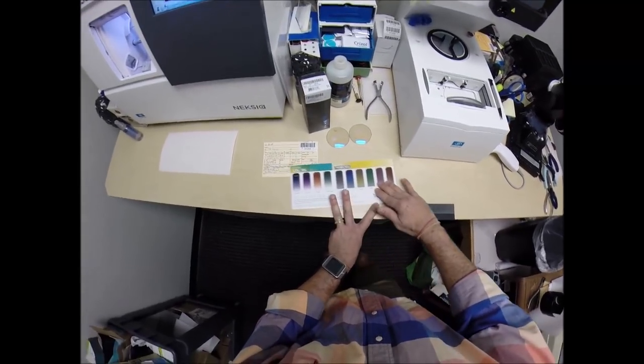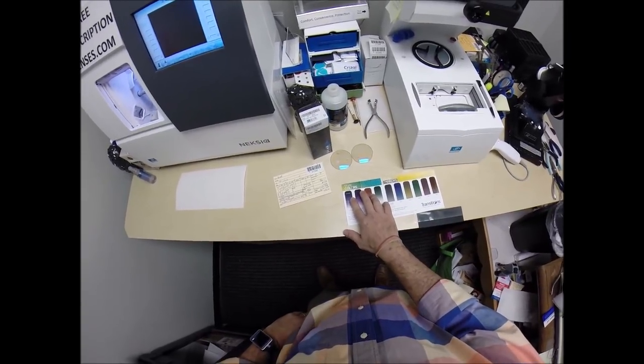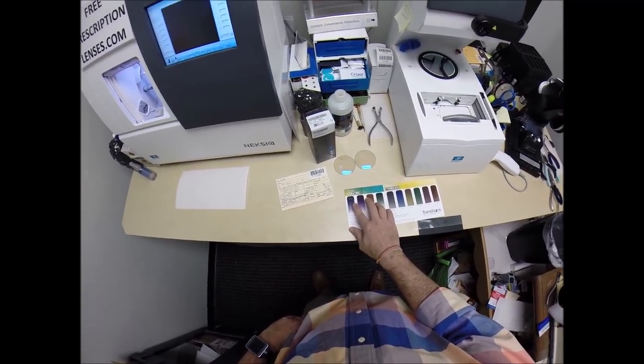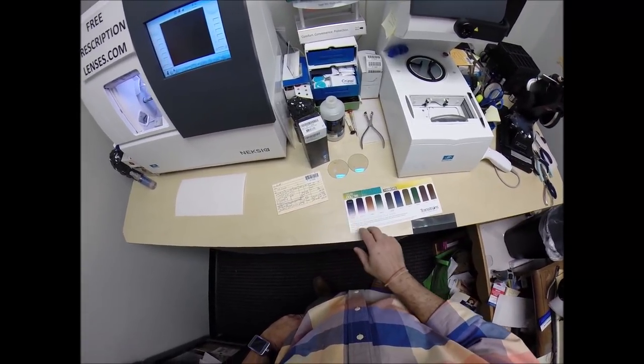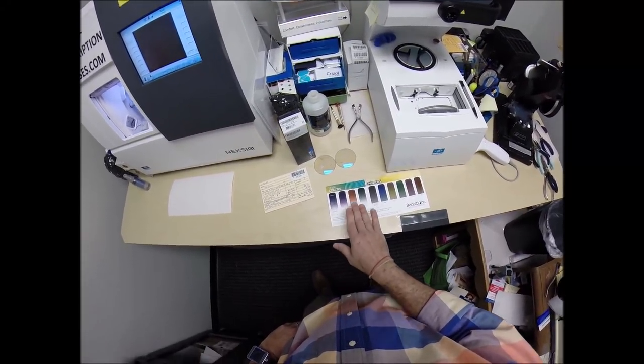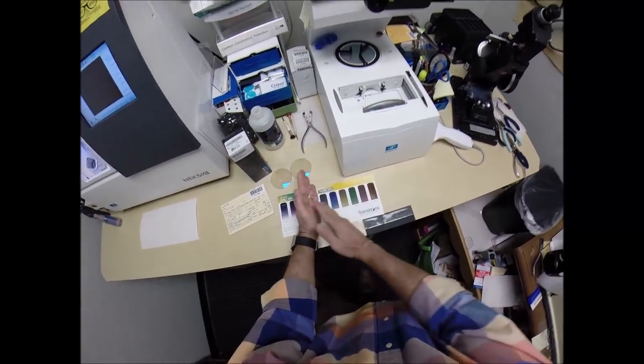That's in the Extra Active. There are new colors of style colors for the regular Transition Signature 7. You can get gray, brown, and green. But now you can do a sapphire, an amethyst, an amber, and emerald. But today, we're going to focus on these.